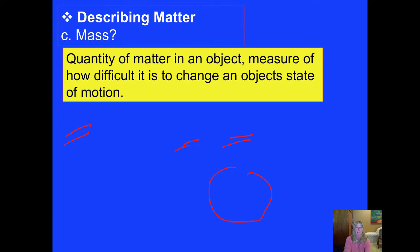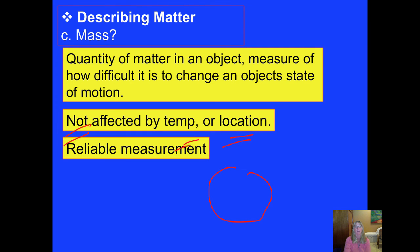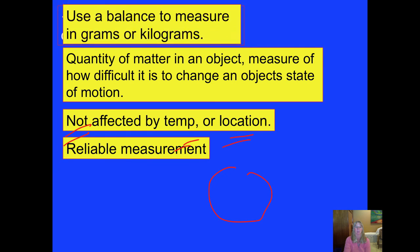So mass is the quantity of matter in an object. It's, in a physics definition, a measure of how difficult it is to change an object when it's in motion. But for us, we can think of it as the quantity of matter. It is not impacted by temperature. A hot brick has the same mass as a cool brick. And a brick would have the same mass in it, whether you were measuring that on the moon or on the Earth. It is a very reliable measurement.